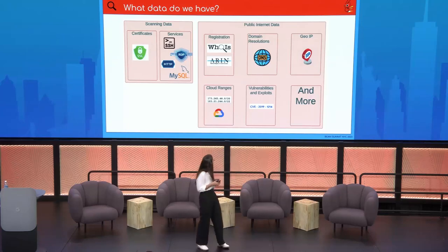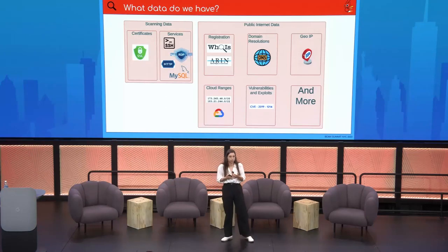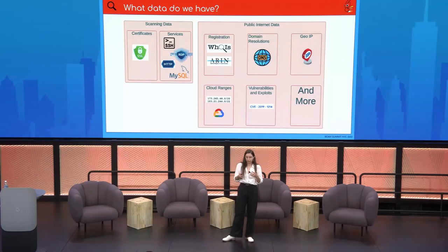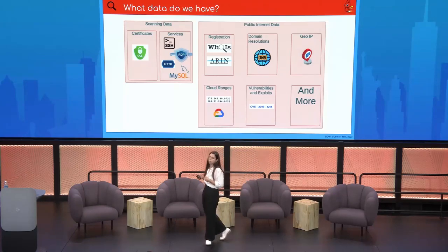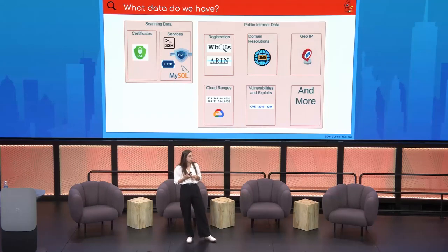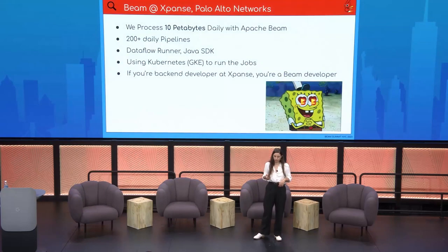Some examples of the data: we are scanning the internet, observing services running out there, so we can find databases, for example. We also need to collect data about who owns the assets we're finding, so we search who owns a domain and IP from public data information. Now let's talk about how we use Beam at Cortex Expanse, Palo Alto Networks.